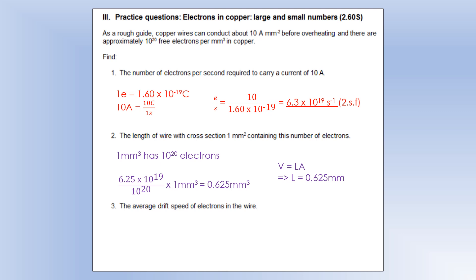The average drift speed of electrons in the wire. Using the distance we've just calculated, we can do distance divided by time — the time being one second, because we've done everything per second — and that gives us 0.65 millimetres per second. Pretty small speed.